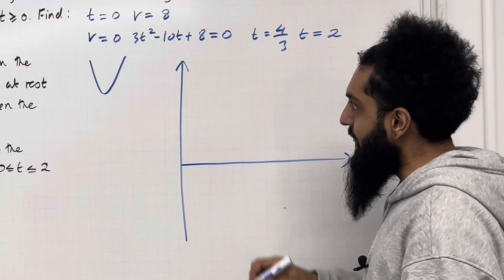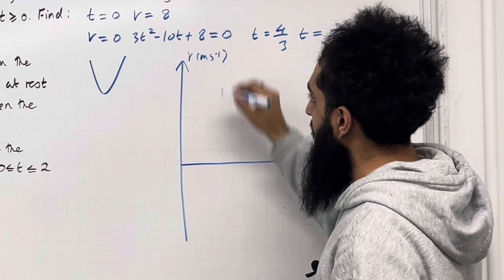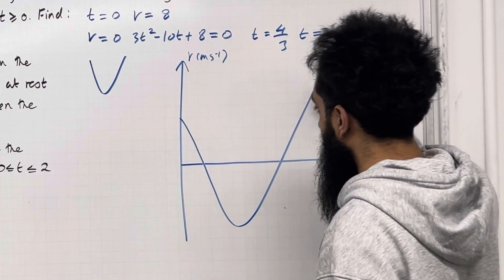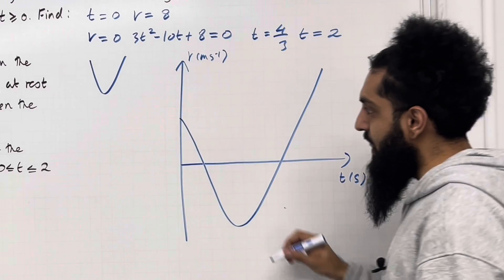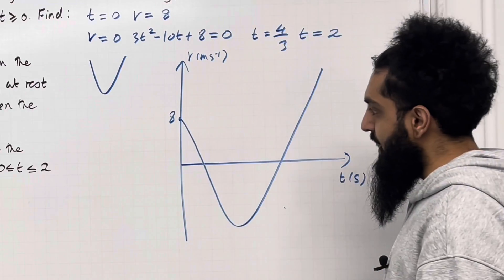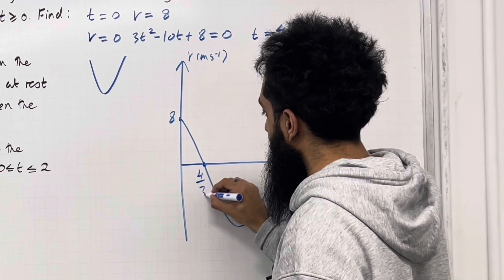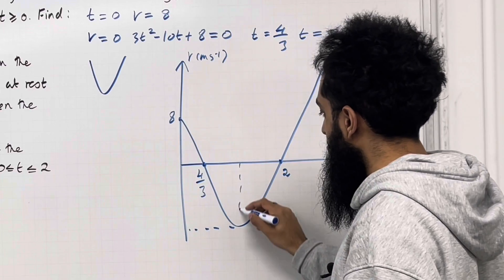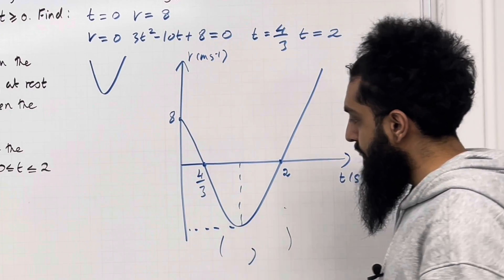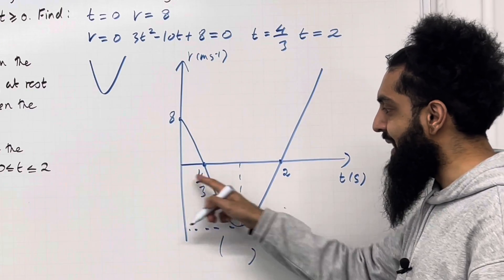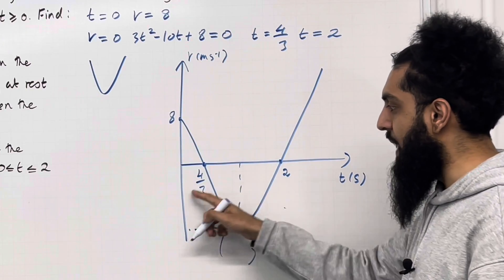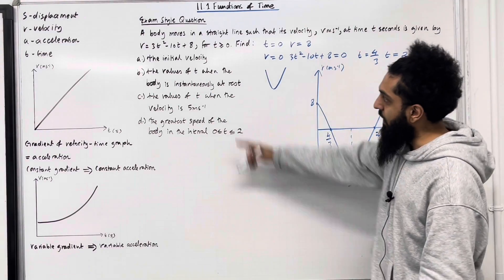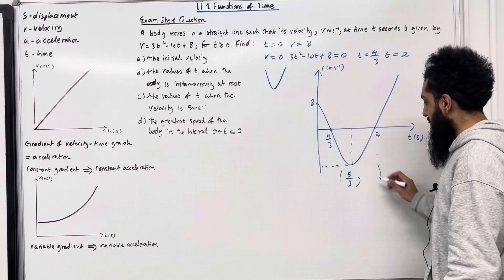The vertical axis represents v in meters per second. And the horizontal axis represents t in seconds. So my graph will look something like this. My v-intercept is 8. My t-intercepts are 4 by 3 and 2. My turning point is as follows. To work out the t-value of the turning point, I can add these two t-values and then divide by 2. This gives me 5 over 3. Now I can substitute 5 over 3 into the velocity equation. And if I do this, I get minus 1 over 3.